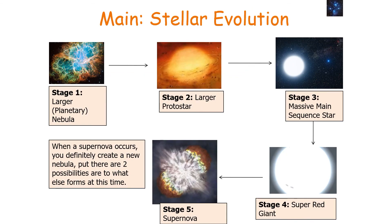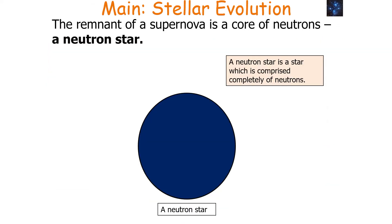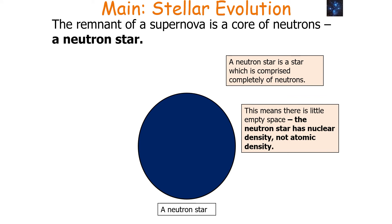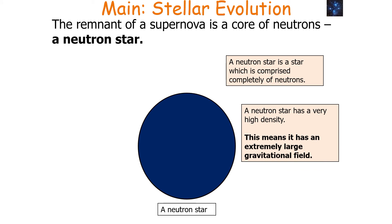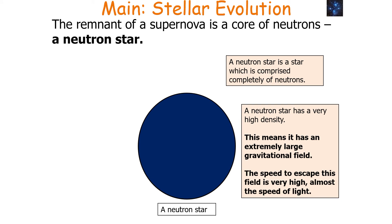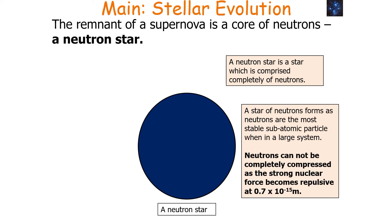When a supernova occurs, you definitely create a new nebula, but there are two possibilities for what else forms. The first possibility is a neutron star — a star comprised completely of neutrons, meaning there is little empty space. The neutron star has nuclear density, not atomic density: 4 × 10¹⁷ kg/m³, but a diameter of only 20 kilometres. This means the neutron star has a very high density and an extremely large gravitational field — the escape velocity is very high, almost the speed of light. Neutrons form the most stable configuration in a large system, but the strong nuclear force becomes repulsive at 0.7 × 10⁻¹⁵ m, preventing neutrons from being completely crushed.